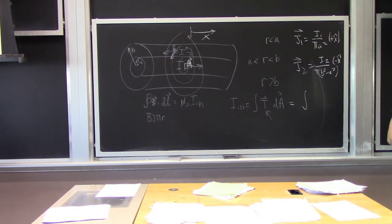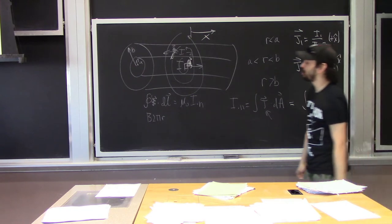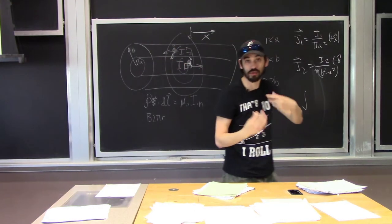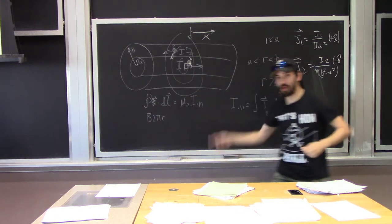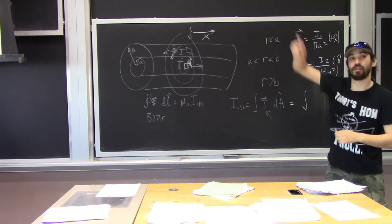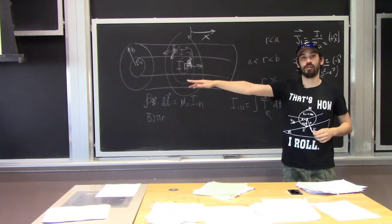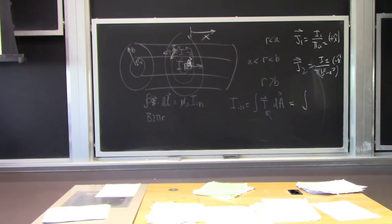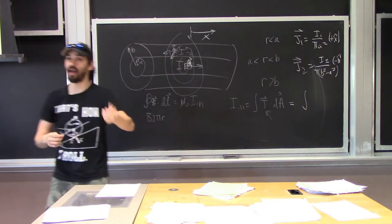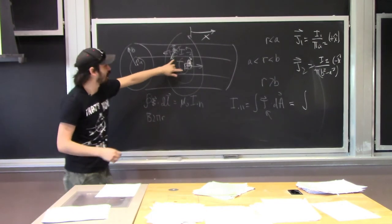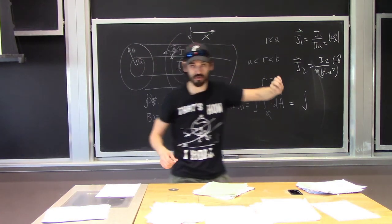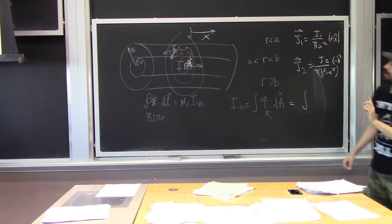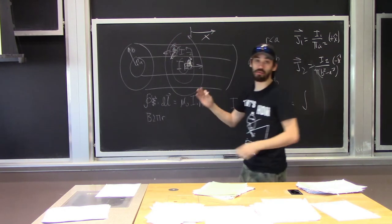Student: Can't you always define your loops going the other way? Yes, you could, but the important thing is that you still want to maintain the connection between dL and dA according to the right-hand rule. If I define my loop going the opposite direction, I would want dA to point accordingly. It's important to connect these two vectors according to the right-hand rule — this will be really important when we get to Faraday's Law.